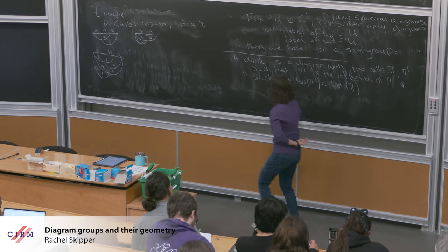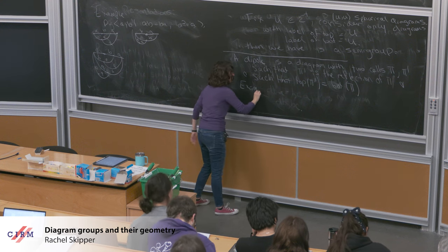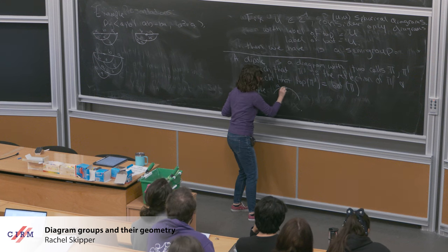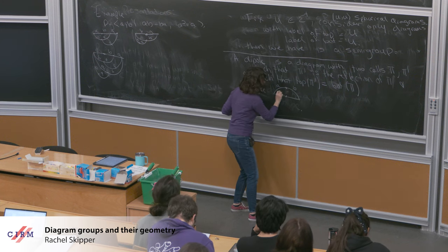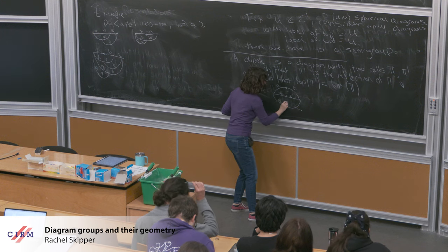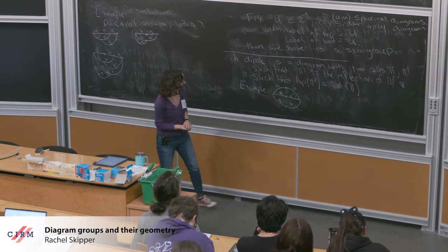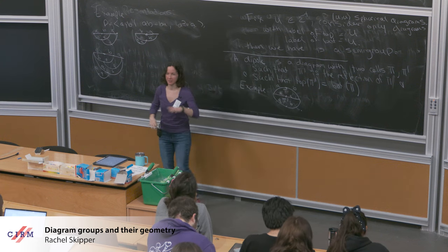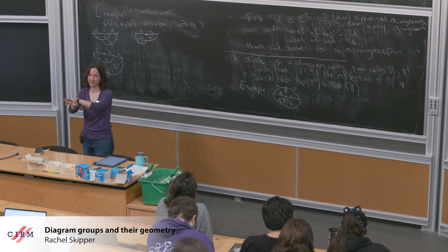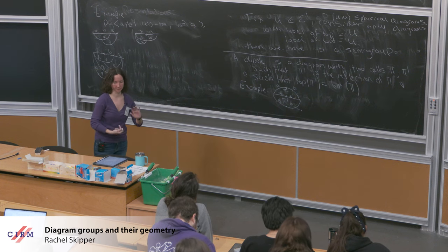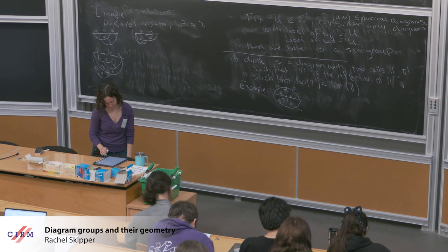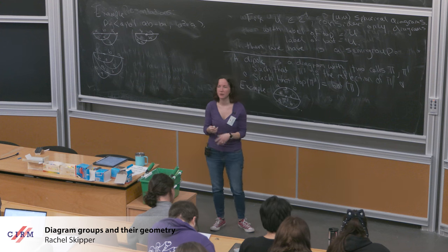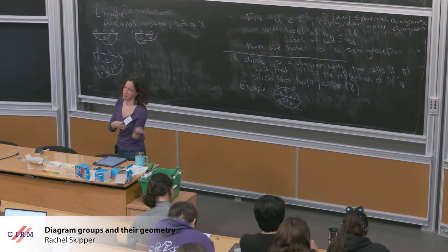For example, using the same presentation, I can look at a diagram that starts as AB, becomes BA, and then goes back to AB. This is a dipole — here is my π and here is my π'. I have these two cells stacked, and the top one is a reflection of the bottom one. Whenever we have dipoles, we can remove them — this is what's going to let us build inverses.